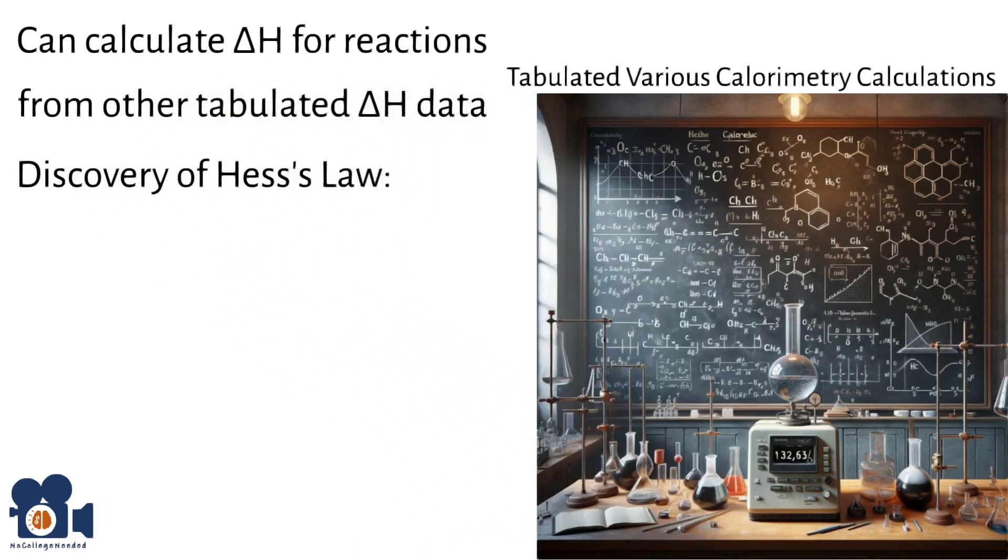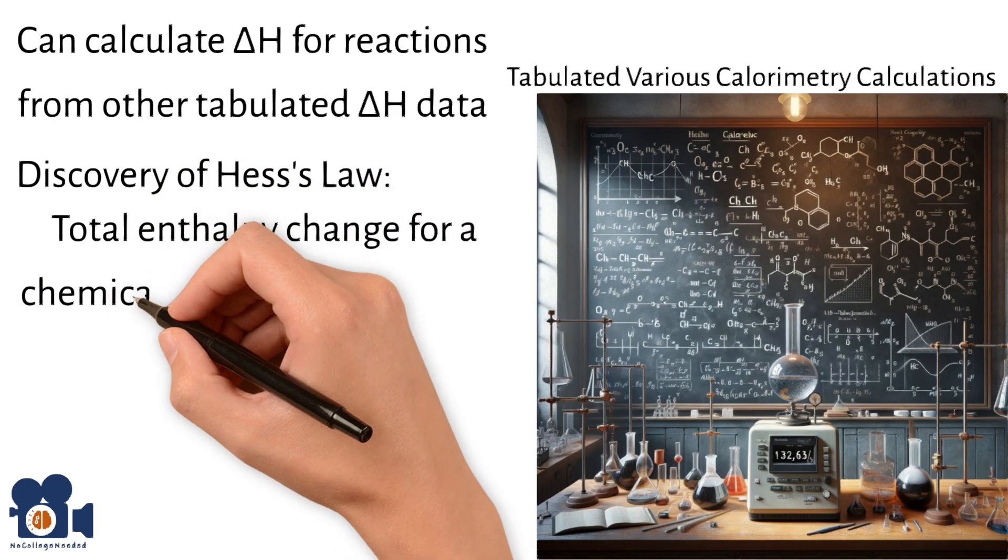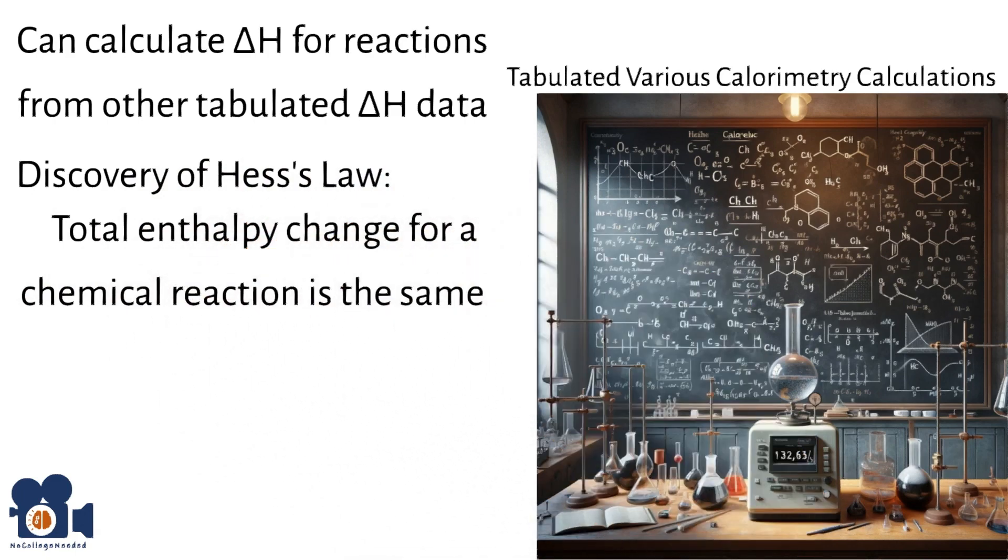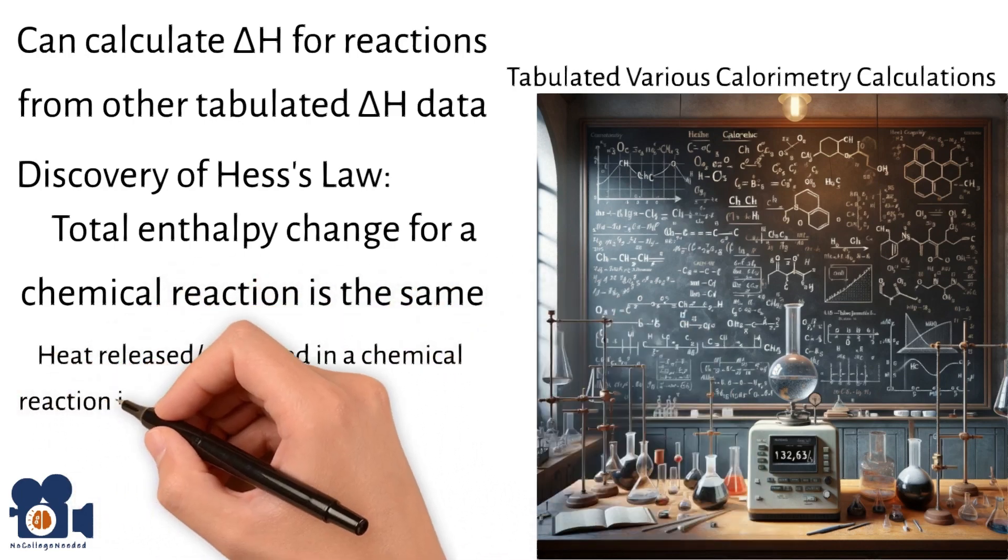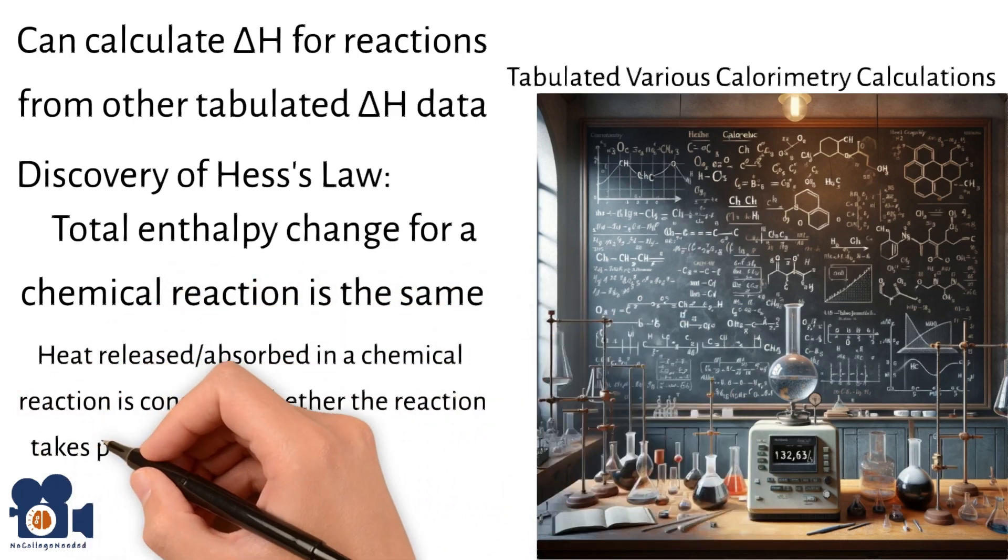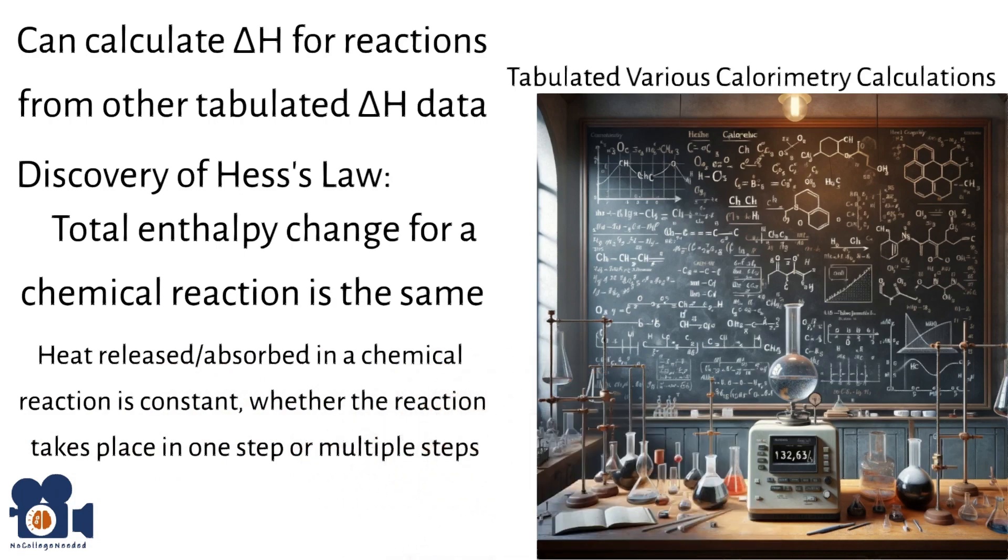Hess's law is a principle in chemistry that states the total enthalpy change for a chemical reaction is the same regardless of the pathway by which the reaction occurs, provided the initial and final conditions are the same. Simplifying this law implies that the heat released or absorbed in a chemical reaction is constant, whether a reaction takes place in one step or multiple steps.